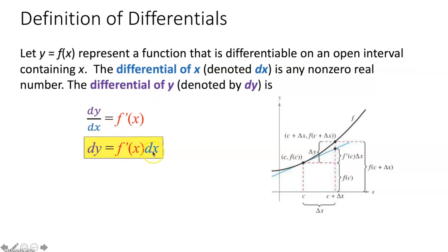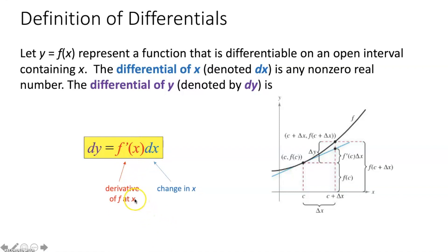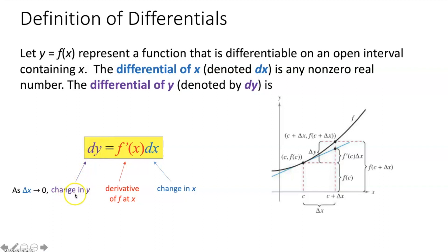dx represents the change in x. f′(x) is the derivative of f at a particular x value. dy is not necessarily the change in y — it's actually approximately equal to delta y as delta x approaches 0. The major things you need to know: dx and delta x mean the same thing, but dy is not necessarily delta y — it's approximately equal to delta y as delta x approaches 0.